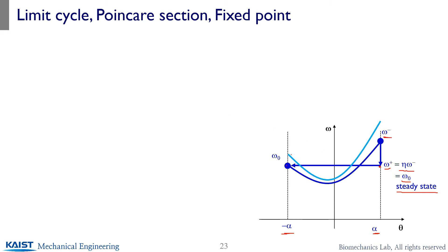Suppose you start from a different initial value like omega naught prime. You have a trajectory over phase space and reach omega minus here. Once the collision occurs, you reduce by a certain amount, switch to the new stance leg, so the angle has a discrete change from alpha to minus alpha. If your initial omega increases over one step to omega prime — greater than before — then as you repeat your steps, you actually diverge; you just keep increasing speed.